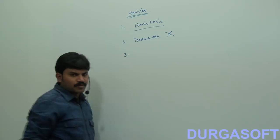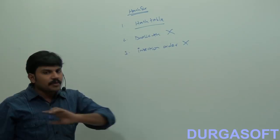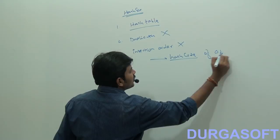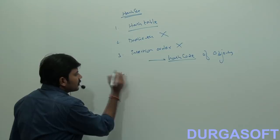Insertion order is not preserved in HashSet. All objects will be inserted based on the hash code of the objects, so the insertion order won't be preserved.